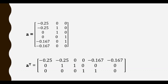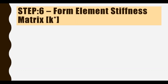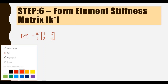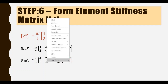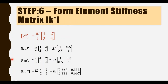Moving to step six, the formation of the element stiffness matrix. The element stiffness matrix K star uses the formula EI divided by length of the member, multiplied by the matrix [4, 2; 2, 4]. For member AB with length 4: EI/4 into the matrix gives EI times [1, 0.5; 0.5, 1]. For member BC with length 4: the element stiffness matrix is again EI times [1, 0.5; 0.5, 1]. For member CD with length 6: the matrix becomes EI times [0.667, 0.333; 0.333, 0.667].